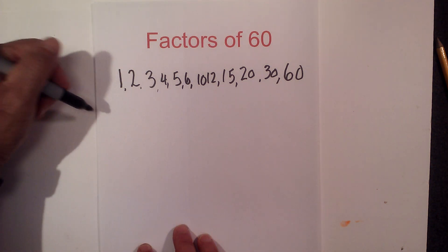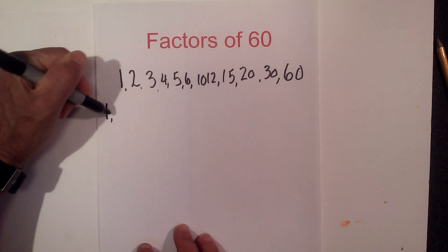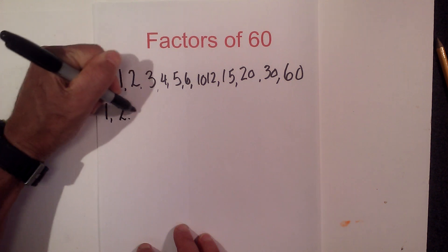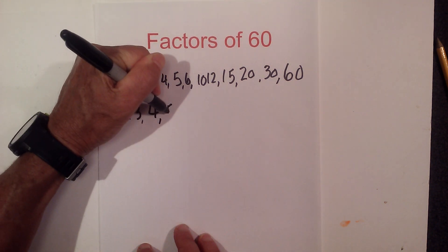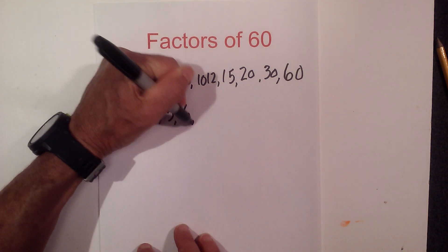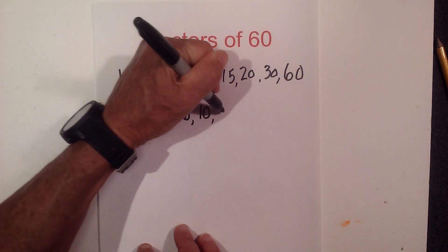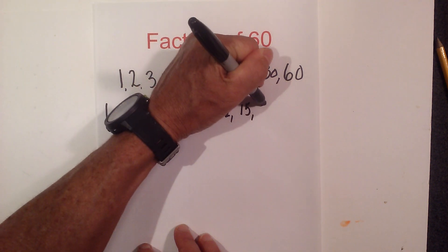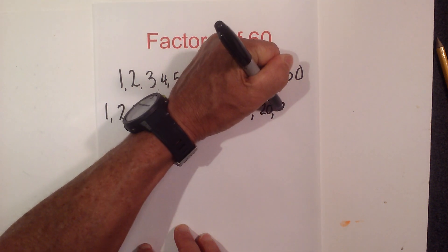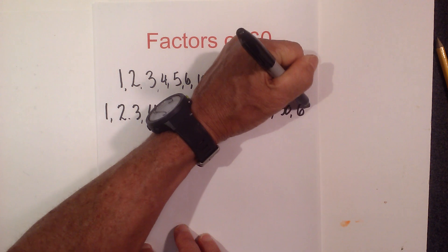So here are the factors. I'll rewrite them: 1, 2, 3, 4, 5, 6, 10, 12, 15, 20, 30, and obviously 60.